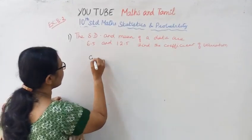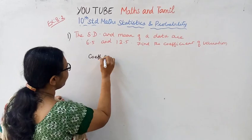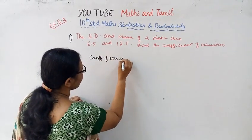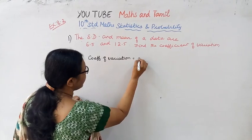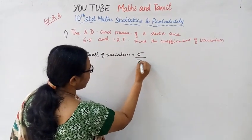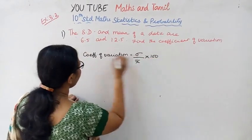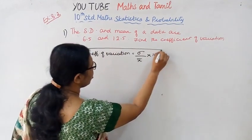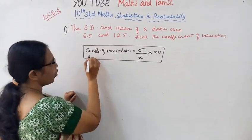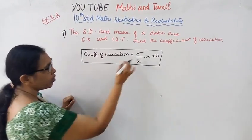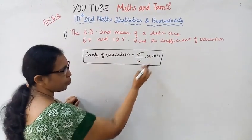There is a formula available. Coefficient of variation is Sigma by X bar into 100. This formula for coefficient of variation is Sigma by X bar into 100.